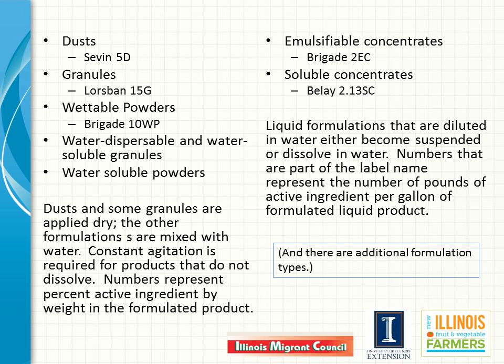Sevin 75D is a 5% dust formulation of carbaryl. Brigade 10WP is a 10% wettable powder formulation that is to be mixed with water to form a suspension, applied through a sprayer, and the 10% refers to the portion of bifenthrin in that wettable powder. The formulations on the right are sold in liquid form, emulsifiable or soluble concentrates, that are also to be diluted in water before application. For liquid products, the numbers that are part of the label name represent the number of pounds of active ingredient per gallon in the formulated liquid product. So Brigade 2EC contains two pounds of the active ingredient bifenthrin per gallon of product.